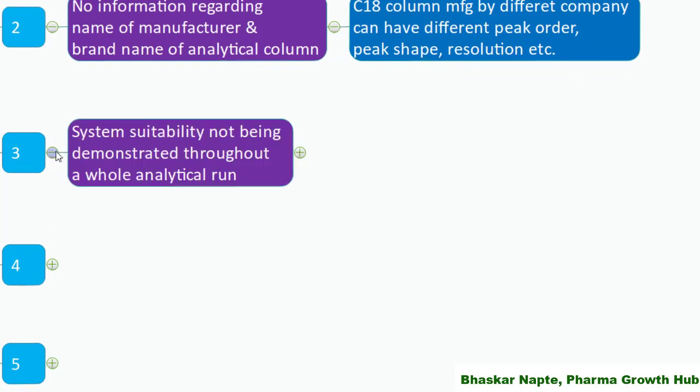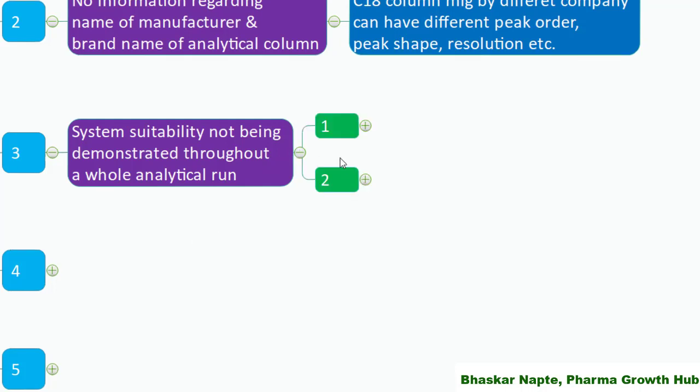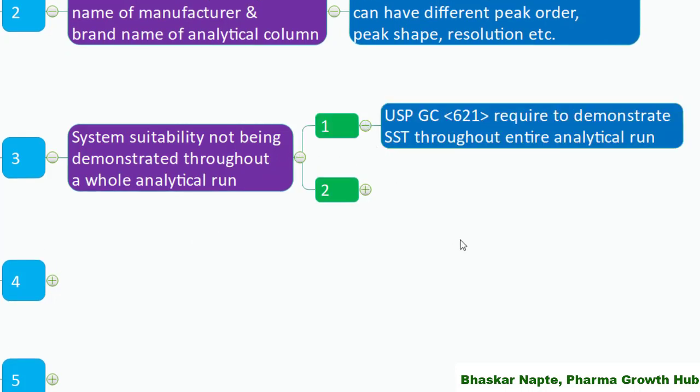The third important point is system suitability not being demonstrated throughout the whole analytical run. USP General Chapter 621 on chromatography states that you need to demonstrate system suitability not only at the beginning of the run but throughout your entire analytical run. This means you need to inject standard solutions after a suitable number of test sample solutions and confirm that the system is still meeting system suitability requirements.